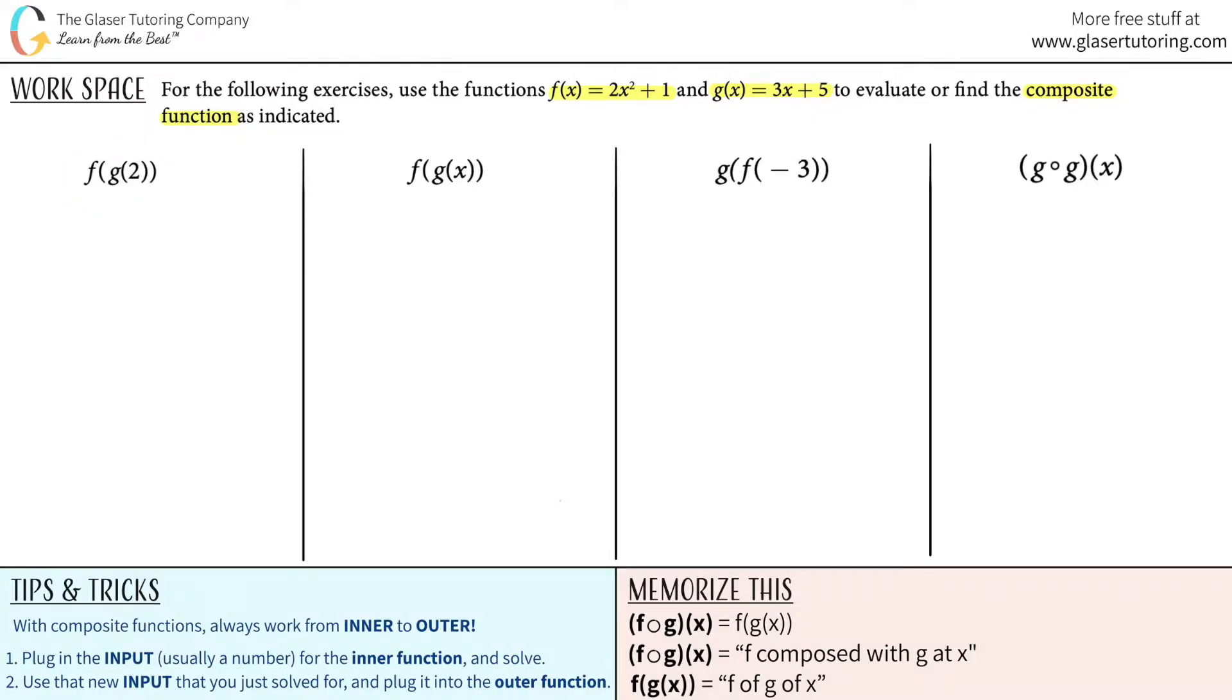f of g of 2. So remember, with composite functions, we always work from the inner function to the outer function. The inner function is the one that's inside the parentheses. Between f and g, the g function would be the inner function here, and the f function would be the outer function. So we always work from inner to outer. The first thing that we're going to do is plug in the input, usually a number, for the inner function and solve. In this case, the number they gave us was 2.